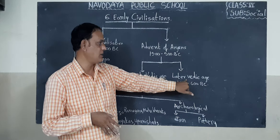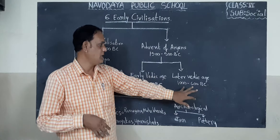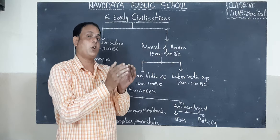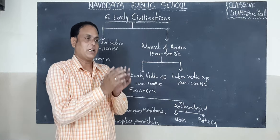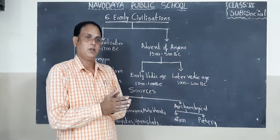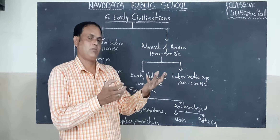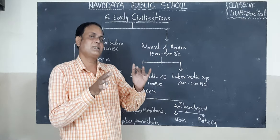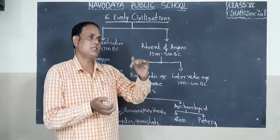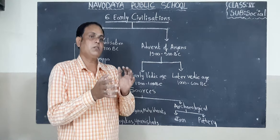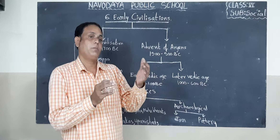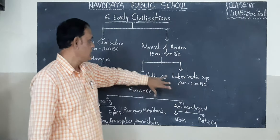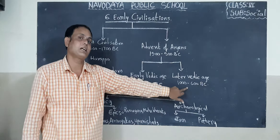In the later Vedic period — 1000 BC to 600 BC — the king occupied a prominent place in the kingdom. The king held all powers; no man would oppose the king's order. The caste system also developed in this age. Sati system also developed, even child marriage. The king had many wives.